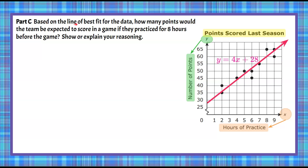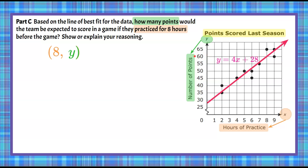Part C: Based on the line of best fit, how many points would the team be expected to score in a game if they practiced for 8 hours? Welcome back. We know hours of practice is our X — so X equals 8 — and we want to find Y. We can use our line of fit on the graph: with 8 hours of practice, going up to the line of fit, we can predict about 60 points scored.